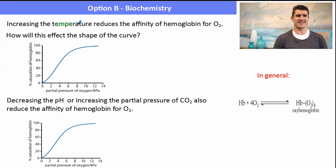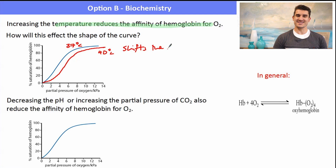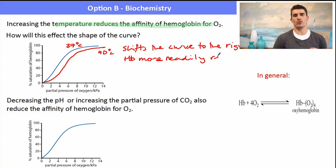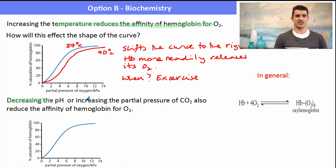Increasing temperature reduces hemoglobin's affinity for O₂. At normal body temperature (~37°C), we have the standard sigmoidal curve; at an elevated temperature (~40°C), the curve shifts to the right, meaning hemoglobin releases oxygen more readily. This is physiologically important during exercise: as body temperature rises, hemoglobin releases oxygen to working tissues, supporting faster metabolic processes.